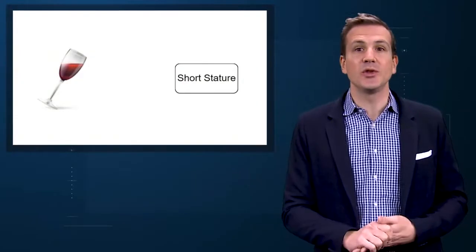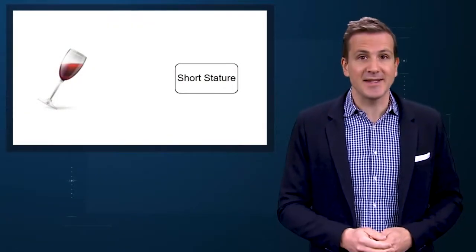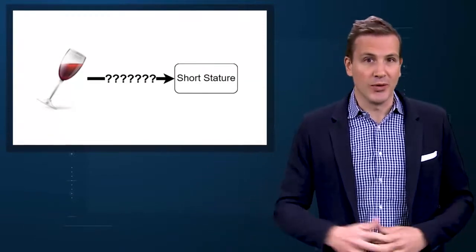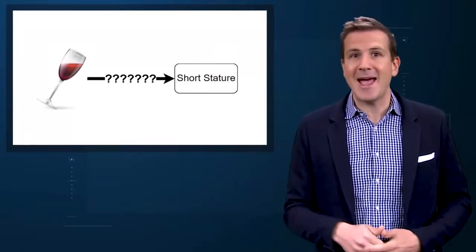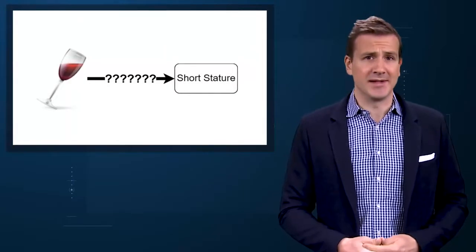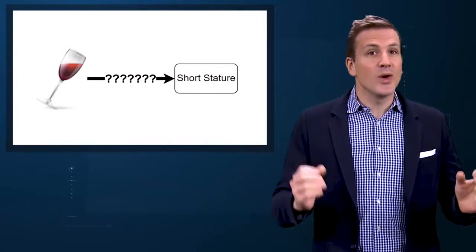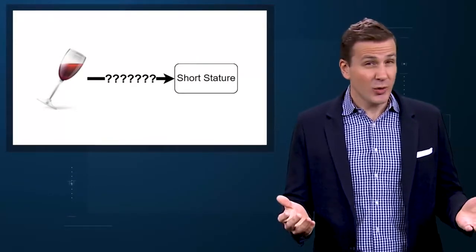But if you want to really understand confounding – and who doesn't – you need to know a bit more. So I'm going to walk you through it. Let's imagine a study that started, as most studies do, with a clinical observation. A researcher noted that individuals who drink rosé are shorter, on average, than those who don't. The hypothesis? Rosé stunts your growth. We can represent this hypothesis with a schematic – you can call it a directed acyclic graph if you want to sound smart at parties, but I often refer to it as a causal diagram. We are asking: does rosé drinking cause short stature?